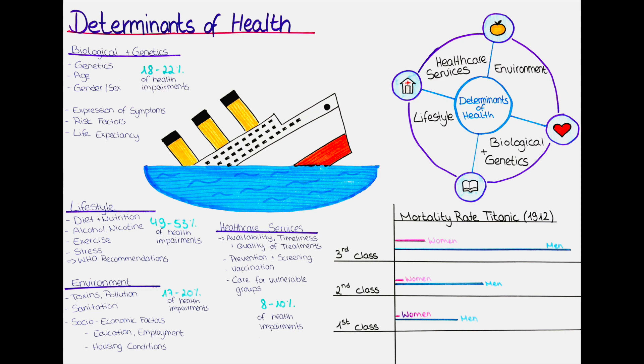The last determinant of health is healthcare services. Healthcare services determine the availability, timeliness and quality of medical treatments for the population and the individual. The quality of healthcare services determines how quickly a potential disease is diagnosed and appropriately treated. Other important factors include the effectiveness of preventive interventions, the coverage of immunization programs, the provision of contraceptives and screening programs. Special attention must be paid to vulnerable groups, including pregnant women, children, elderly and chronically ill patients. Statistics show that healthcare services account for the least proportion of ill health, with only 8 to 10% of health impairments.